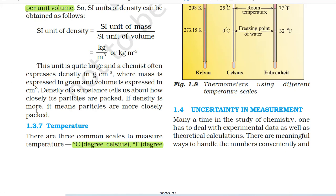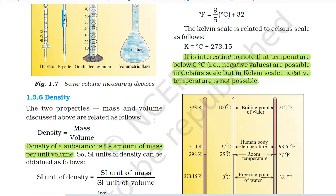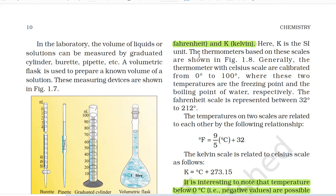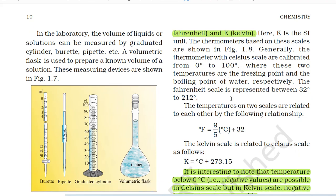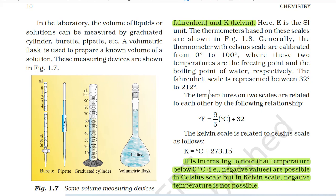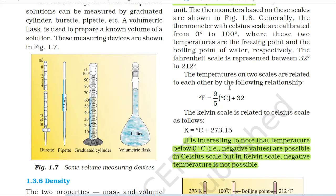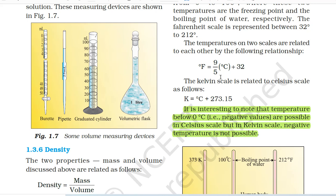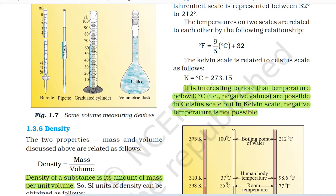1.3.7 Temperature. There are three common scales to measure temperature: degree Celsius, degree Fahrenheit and Kelvin. Kelvin (K) is the SI unit. The thermometers with Celsius scale are calibrated from 0° to 100°, where these two temperatures are the freezing point and the boiling point of water respectively. The Fahrenheit scale is represented between 32° to 212°. The temperatures on the two scales are related by: °F = (9/5)°C + 32. The Kelvin scale is related to Celsius scale as: K = °C + 273.15. Temperature below 0°C (negative values) is possible in Celsius scale, but in Kelvin scale, negative temperature is not possible.